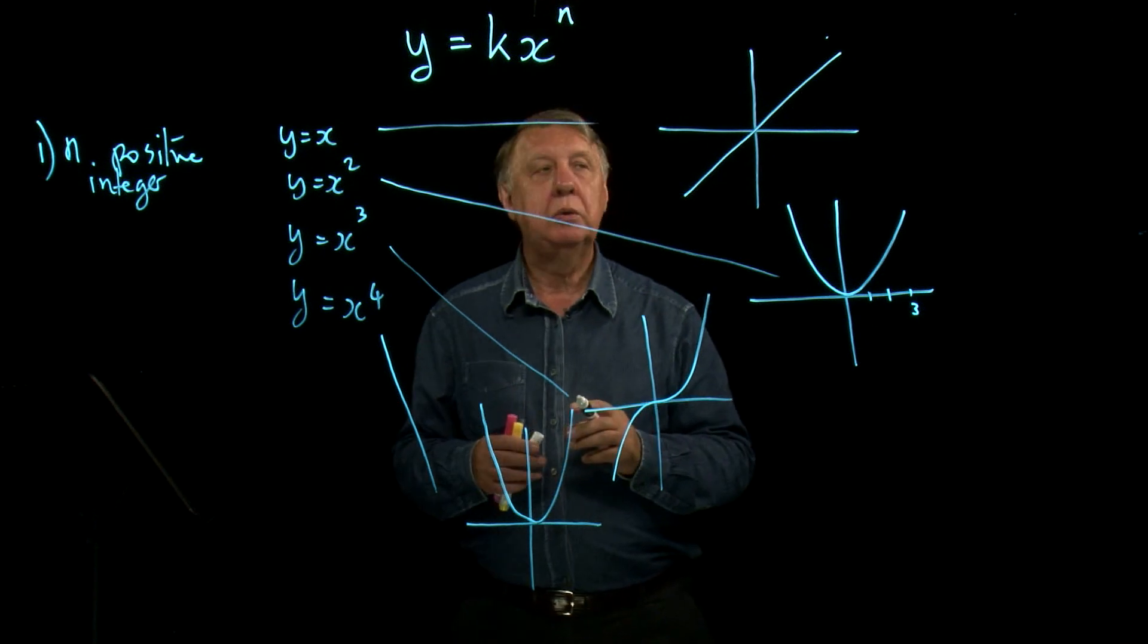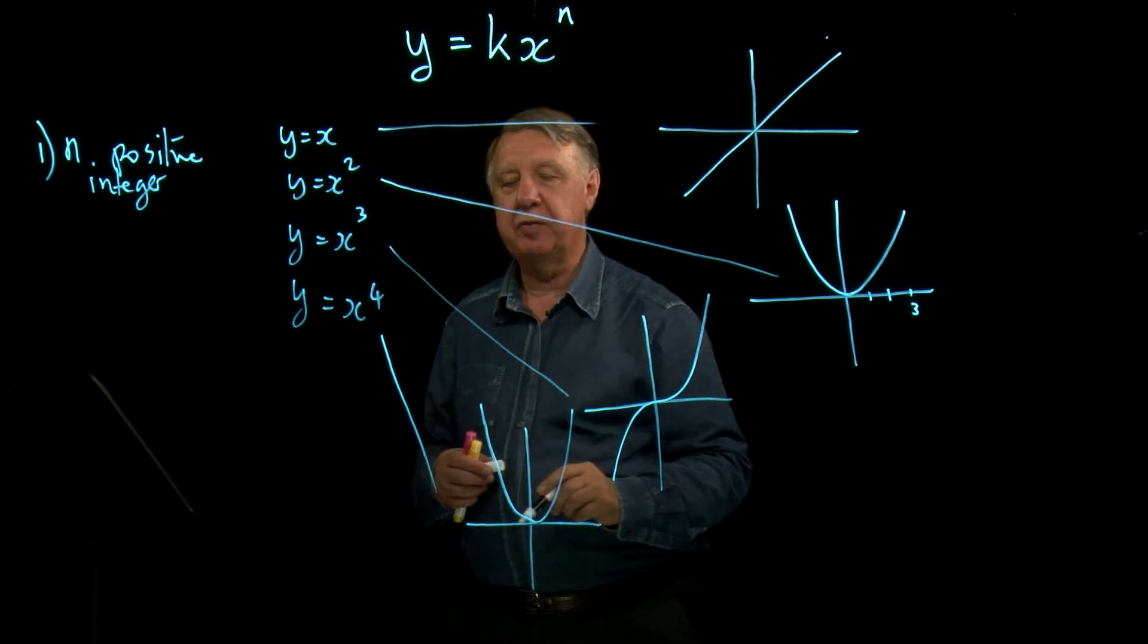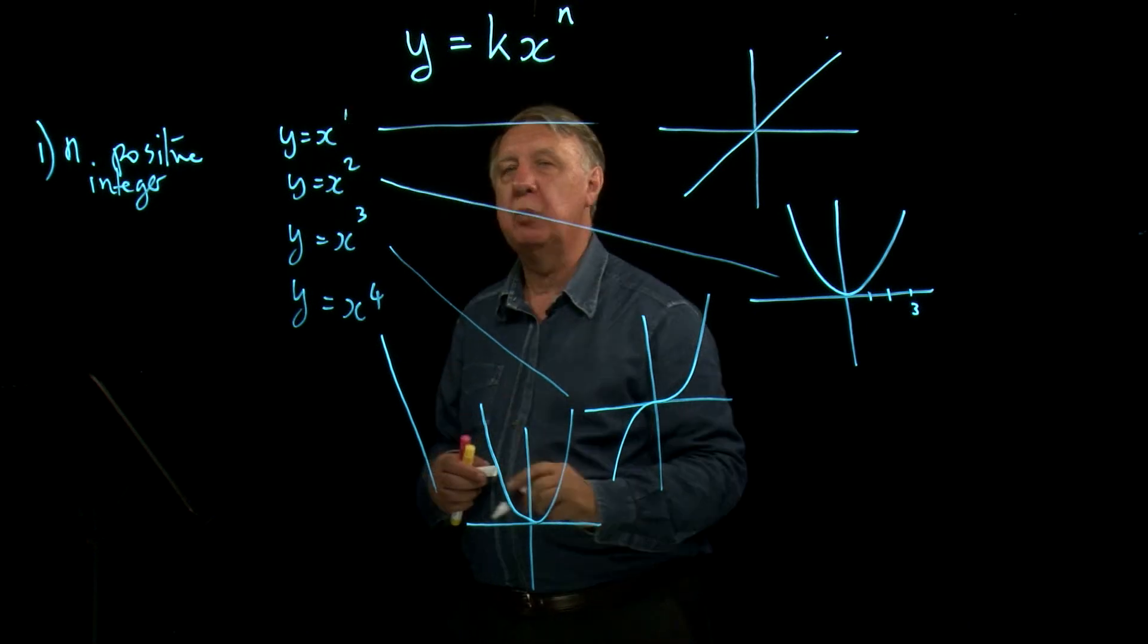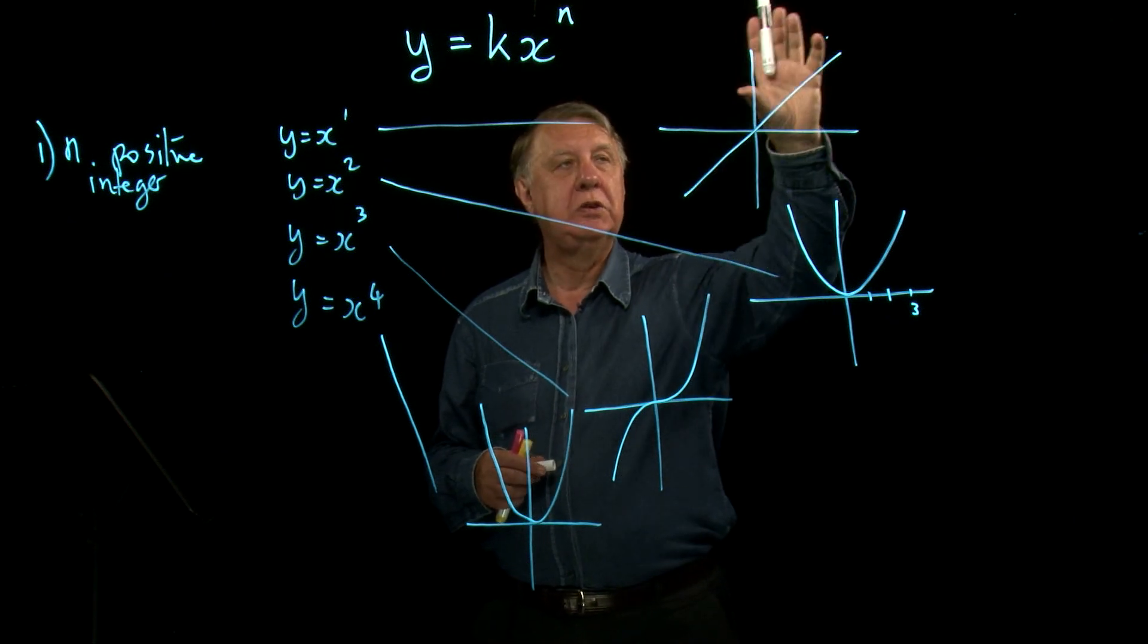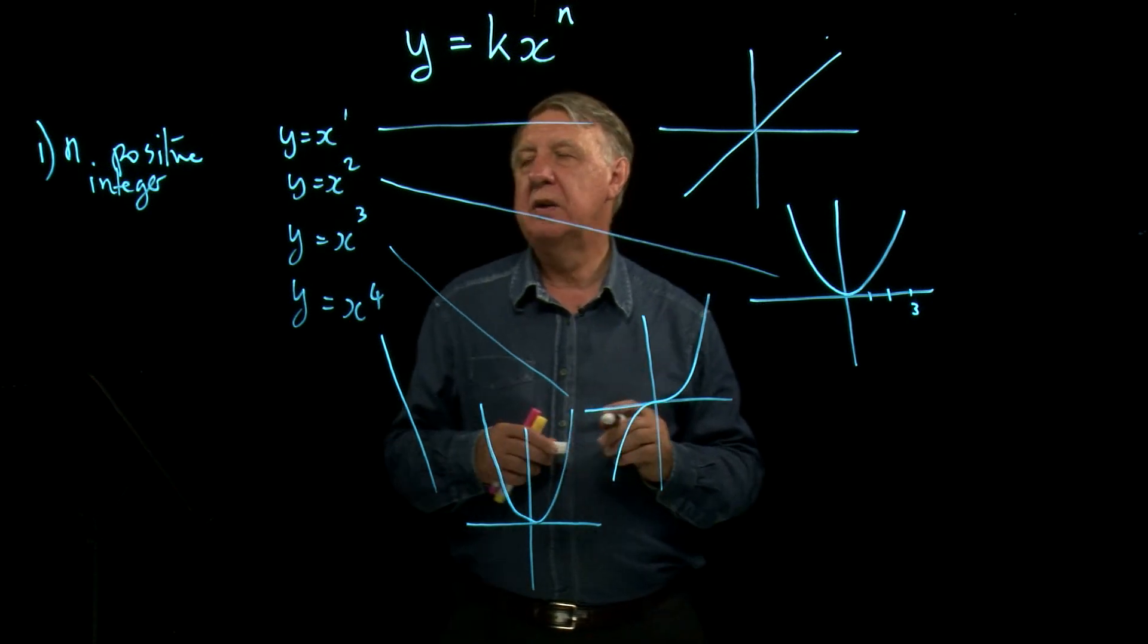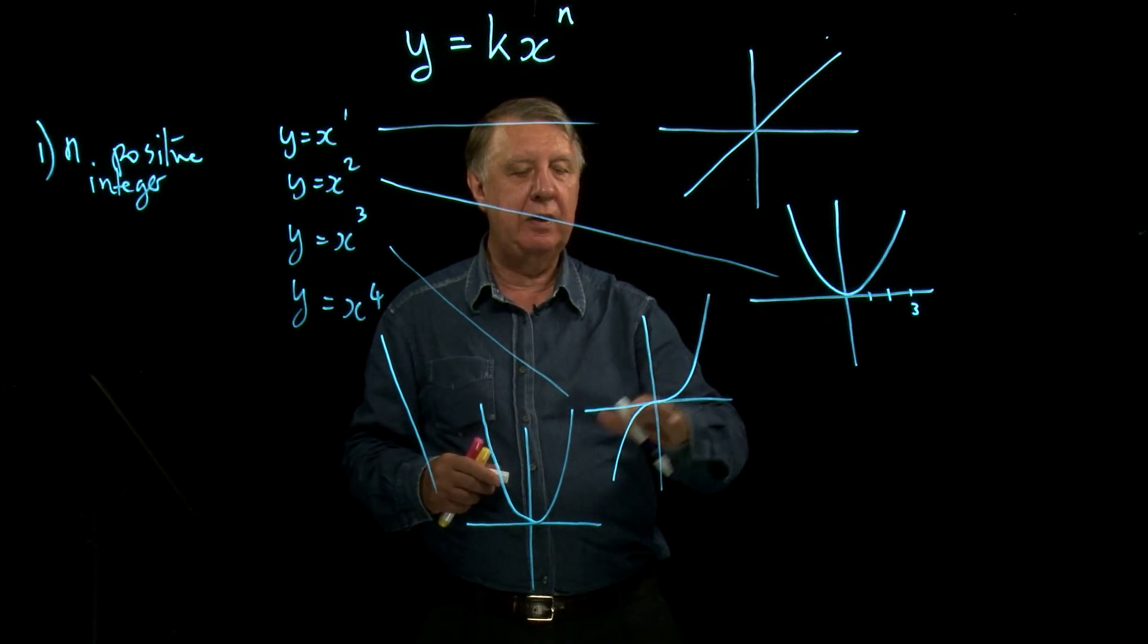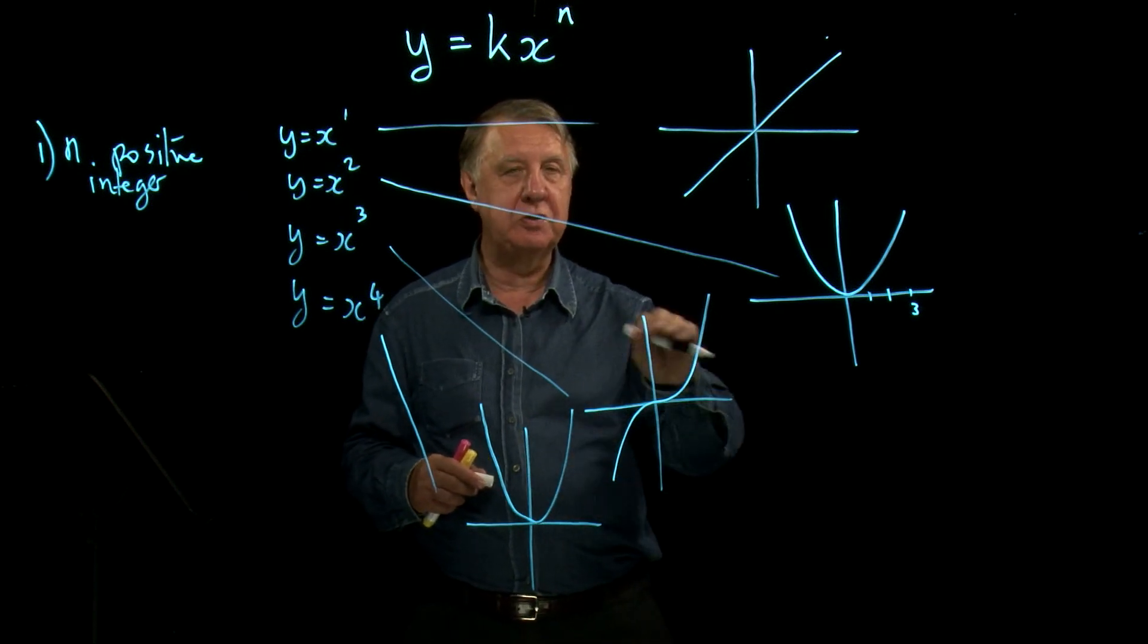So we can see what happens then: if n is an even power, x squared, x to the fourth, it tends to be this sort of shape here. Whereas if n is odd - even here, I mean this is really equals x to the power 1 - it's still got the shape of going through from this quadrant to that quadrant up there. So that's the first basic situation then: if n is a positive integer, we have this swapping over between a parabola type and that sort of squiggly curve going from this quadrant to this quadrant.